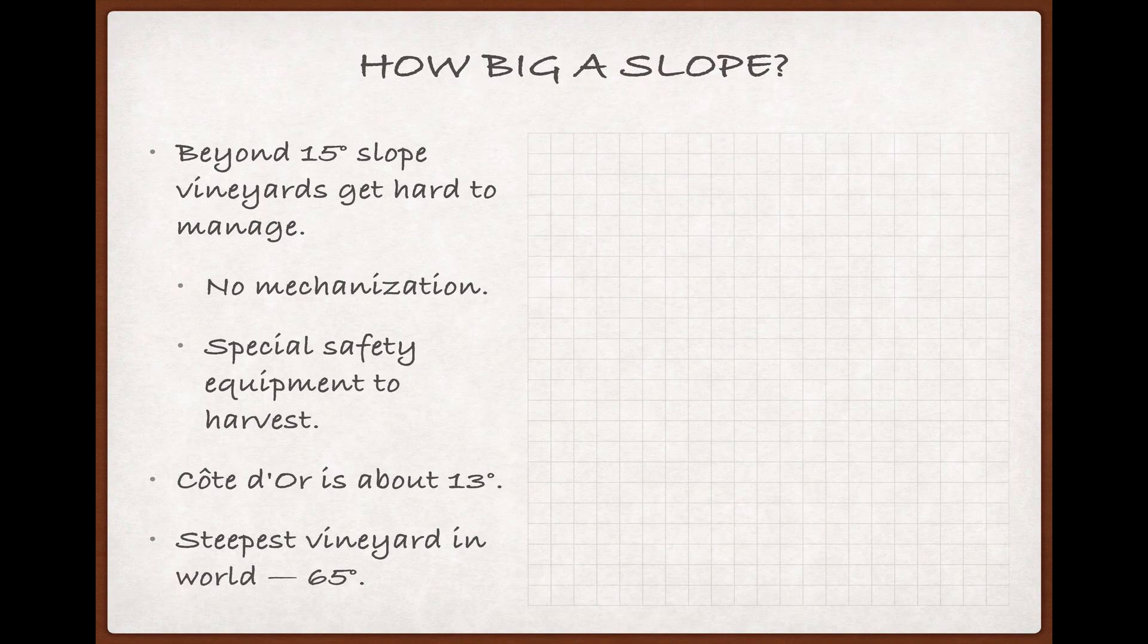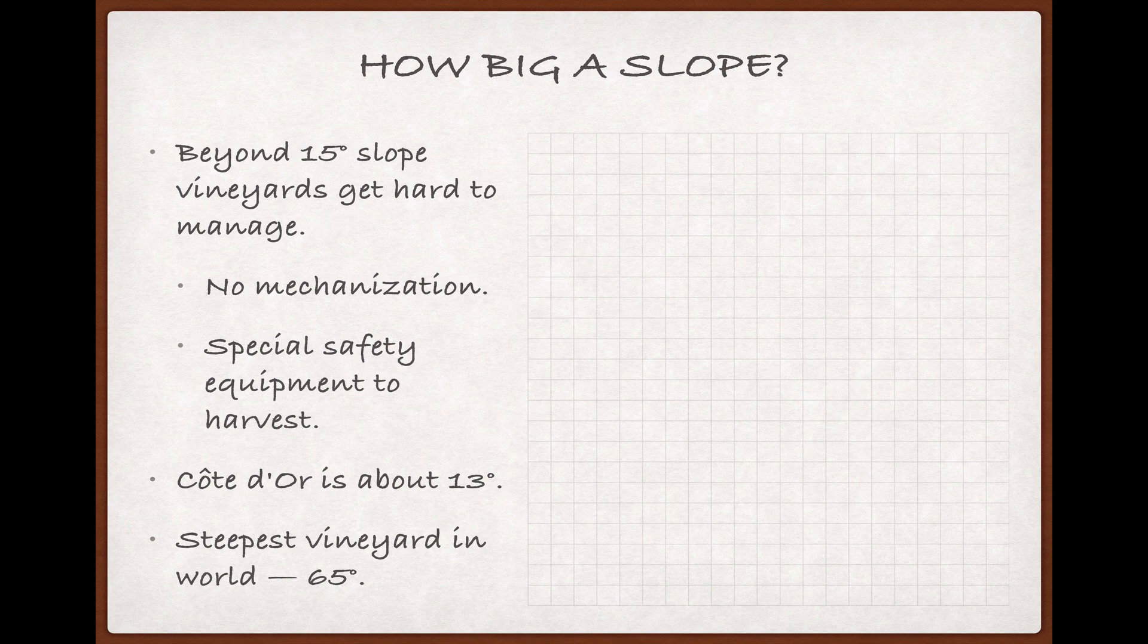You may have noticed that the charts I've been using max out at 15-degree slope. That's because once you get beyond 15 degrees, it becomes more and more difficult to manage vines. Because of the danger of rollover, as well as other issues, mechanical harvesters are usually out of the question beyond 15 degrees.